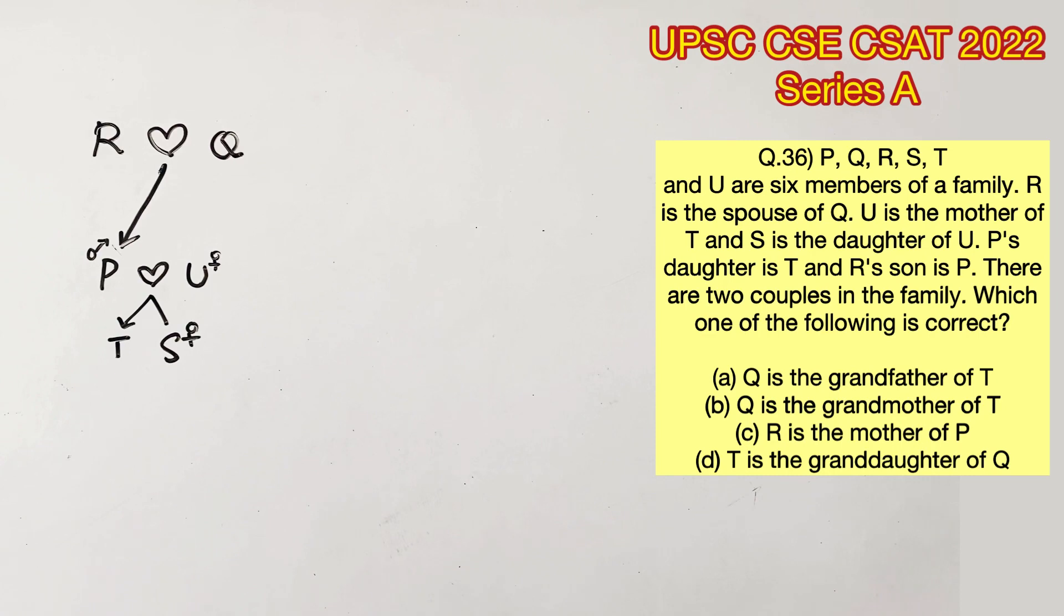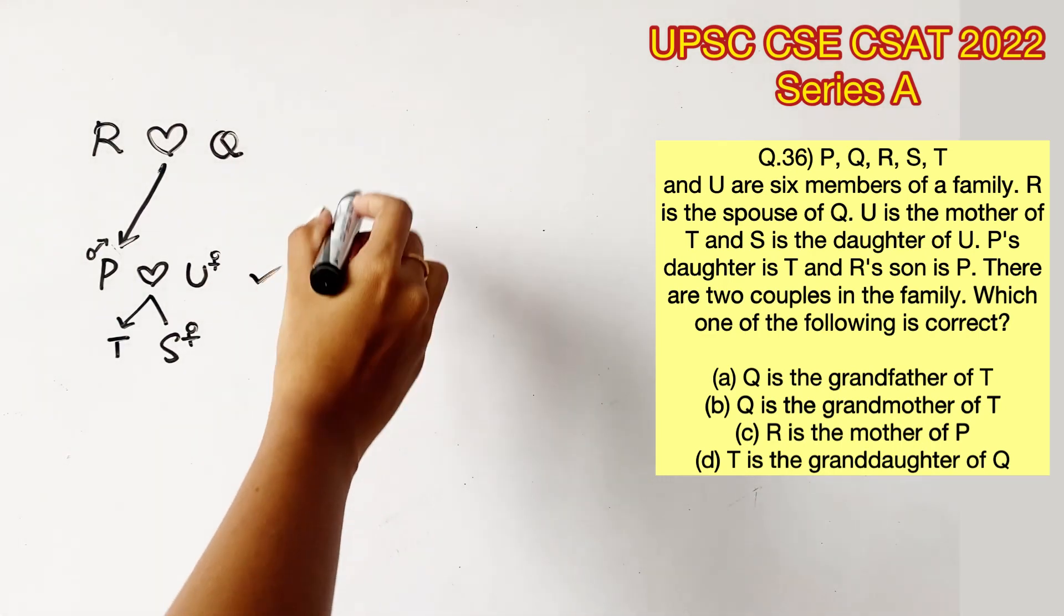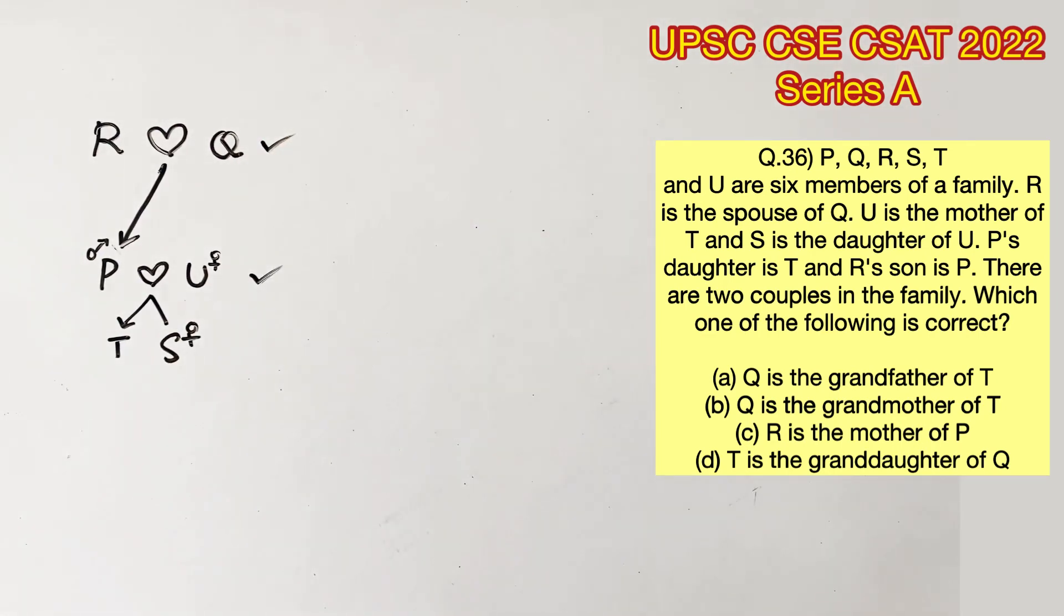Then, the question says that there are two couples in the family. We have two couples, 1 and 2. Now, all we need to do is to find the right answer. Also, note that the gender of R or Q is unknown.